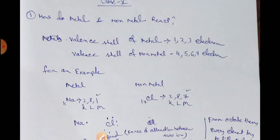We know that the valence shell of metal, in the case of metal, the valence shell will be 1, 2, and 3 electrons. And in the case of non-metal, 4, 5, 6, 7 electrons in the valence shell.